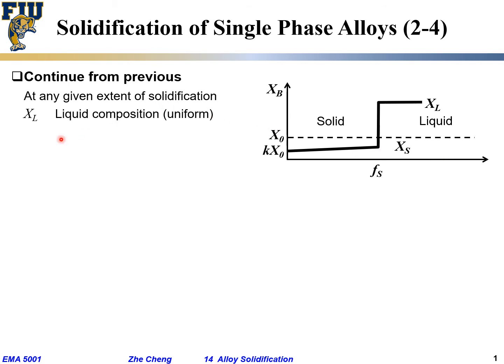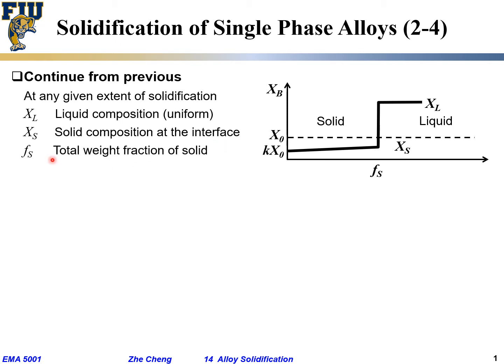Let's define a few terms. xl is the liquid composition — it's uniform. xs is the solid composition, but only at the interface. And then fs is the total so-called weight fraction — if we assume no changing densities, essentially also the length — the total weight fraction of solid. fl is the weight fraction of liquid. fs plus fl, the fraction of solid plus the fraction of liquid, adds up to 1. So fl equals 1 minus fs.